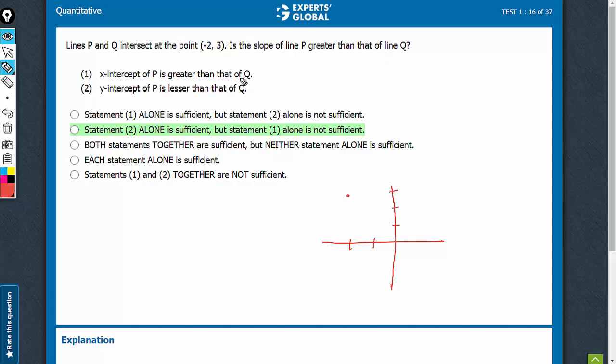Statement 1: x-intercept of p is greater than that of q. So let's see - this is one line, and if it falls more sharply, something like this. You see, x-intercept of p, so this becomes line p and this becomes line q.